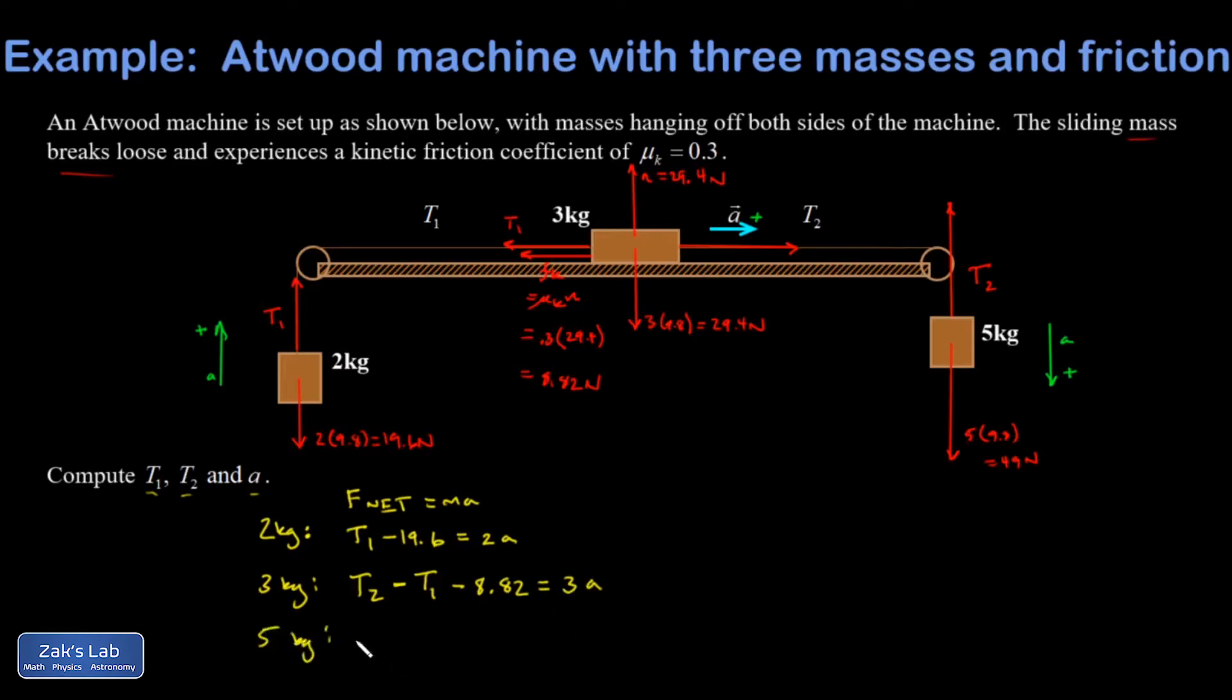Downward is positive there in order to make a positive. So I have 49 newtons down minus T2 pointing up equals five times a. So I've set it up so all of these a's are positive. If you have one of these being negative and the other is positive you cannot solve the system of equations.